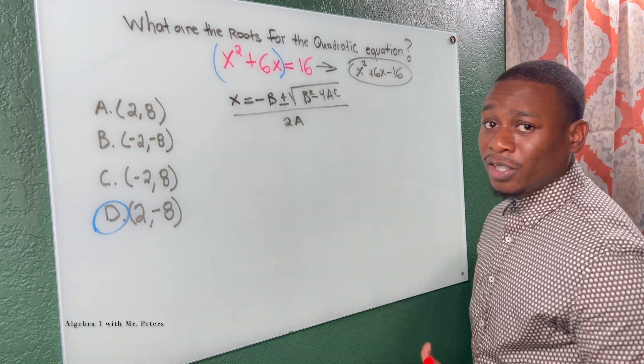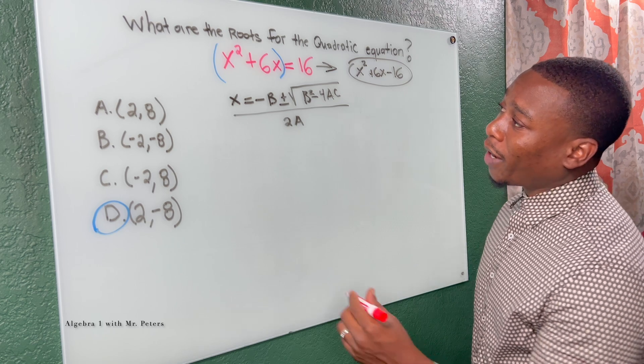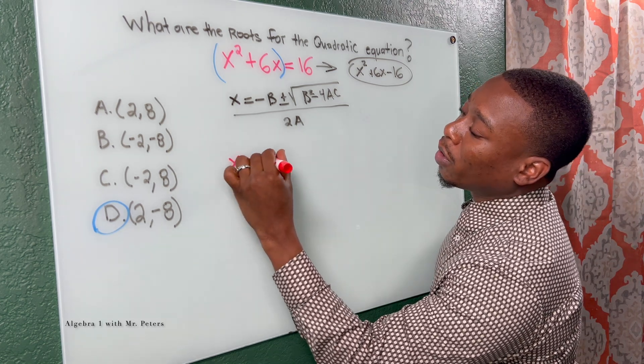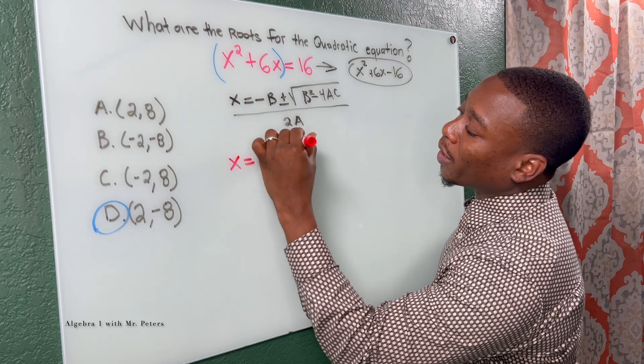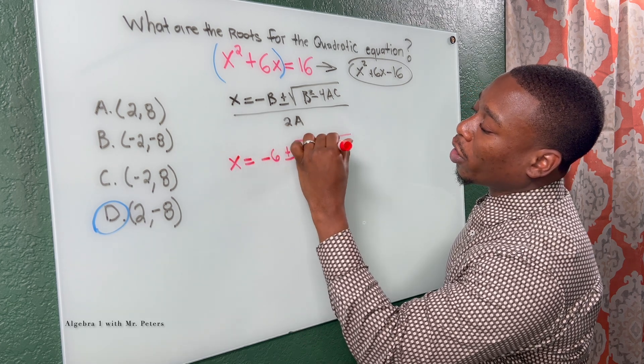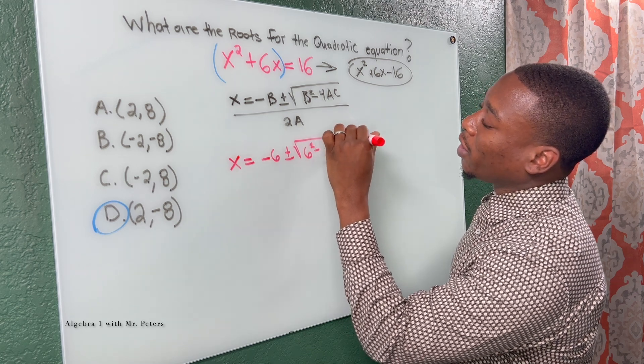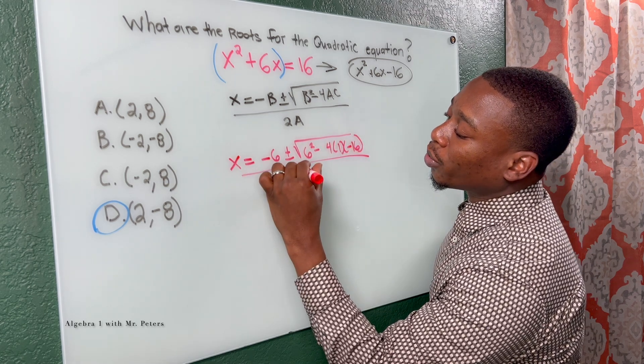So I wouldn't even do this. I would stick to completing the square or just regular factoring, but let's say you forgot. So now we have x is equal to negative six plus or minus six squared minus four times one times negative 16, all over two times one.